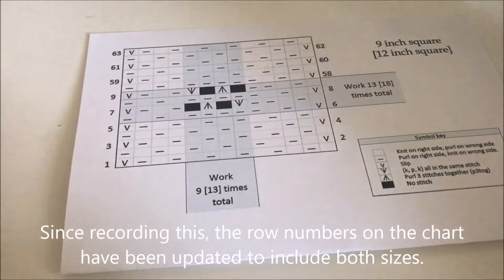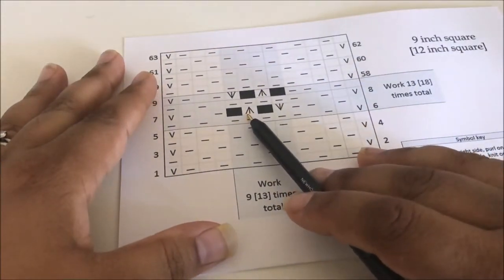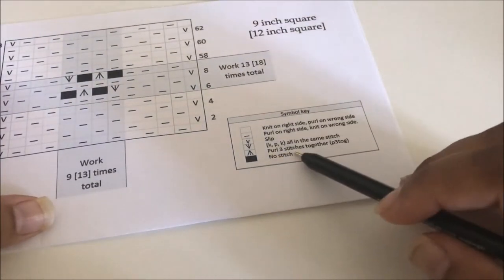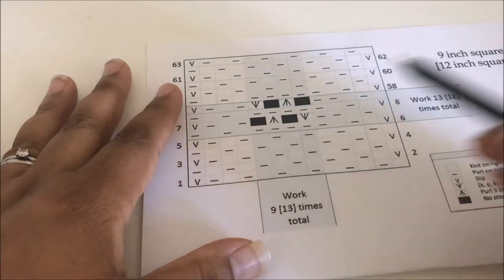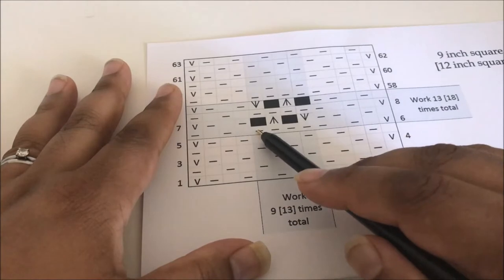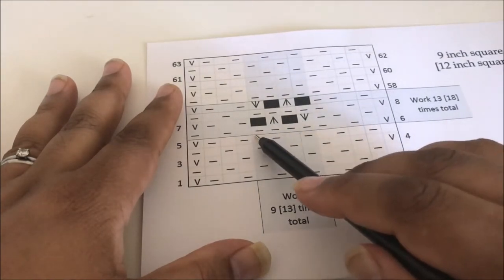How can you do no stitch when there's obviously a stitch below it? Well, here's why. Do you see this stitch here? This is actually a purl three stitches together. So this decrease takes three stitches and makes them into one stitch. This one stitch here is going to use up all three of these stitches, which is why there's no other stitch here or here.